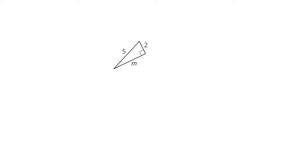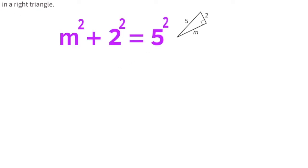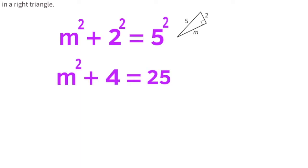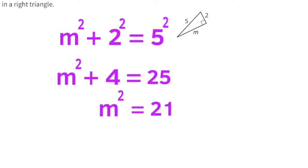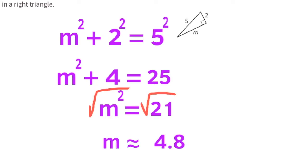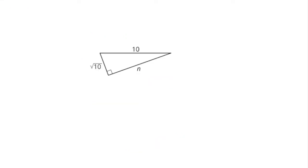Let's find another missing side length. We use m² + 2² = 5². Since 2² is 4 and 5² is 25, the equation reads m² + 4 = 25. Subtracting 4 from 25 gives 21, so m² = 21. The square root of 21 is approximately 4.8, so side length m is approximately 4.8 units.